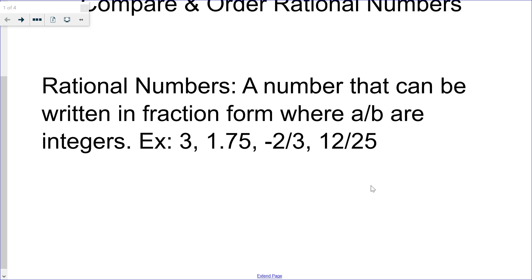Basically any number that we see throughout sixth grade is going to be a rational number. An example of a number that is not rational would be pi — 3.14 and then it continues on and on and on. It never ends. You cannot put that in fraction form because it's just a repeating decimal that never ends.